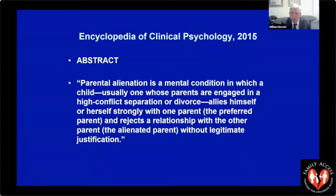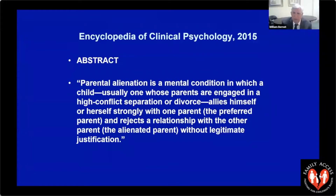The Encyclopedia of Clinical Psychology, also published by Wiley, has a chapter on parental alienation defining it as 'a mental condition in which a child, usually one whose parents are engaged in a high-conflict separation or divorce, allies himself or herself strongly with one parent, the preferred parent, and rejects the relationship with the other parent, the alienated parent, without legitimate justification.' That's the same definition I use because I wrote this section of the encyclopedia — Wiley invited me to write it.